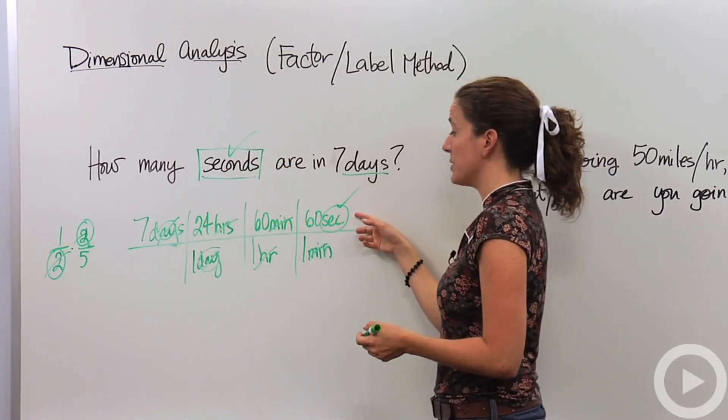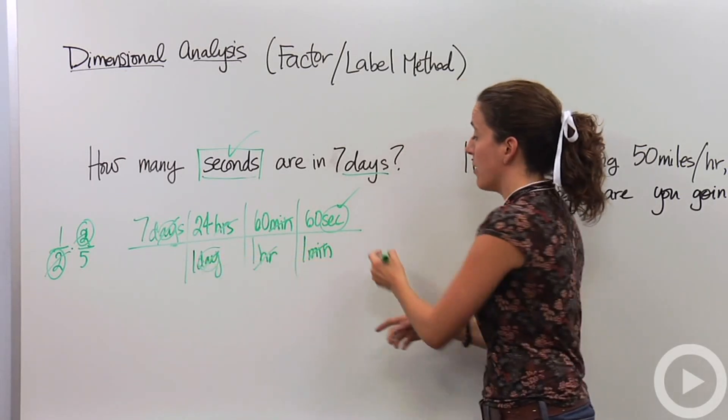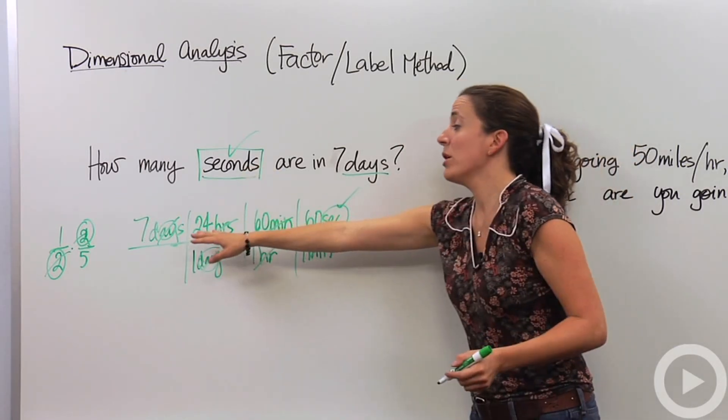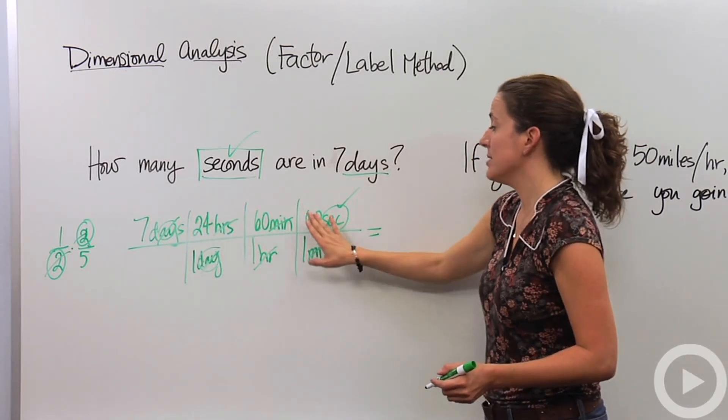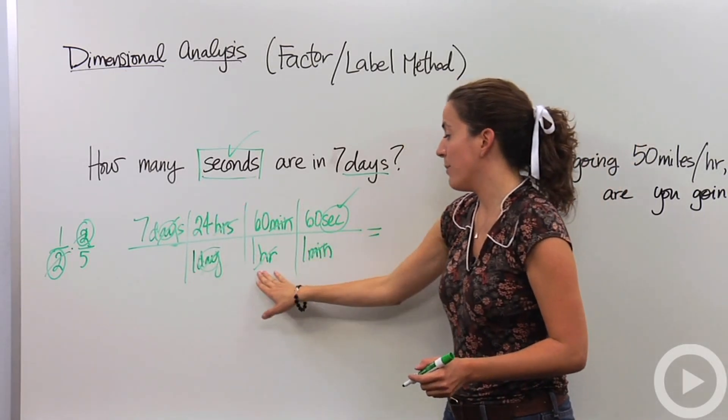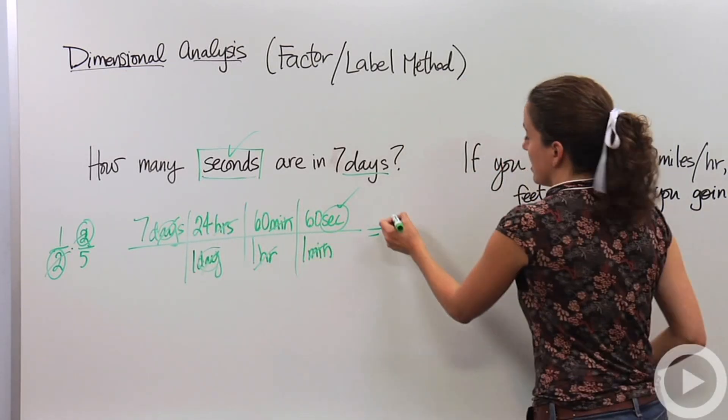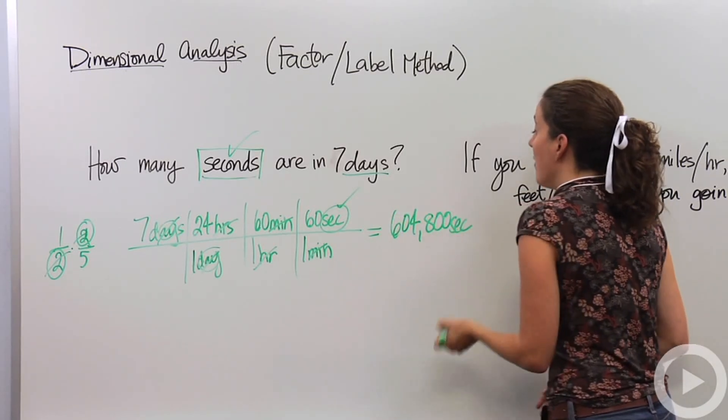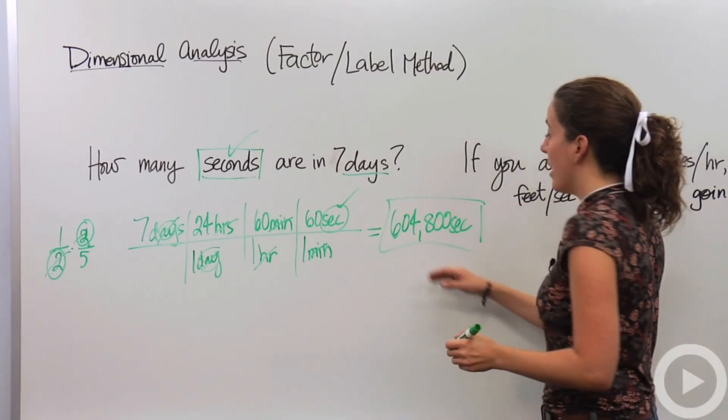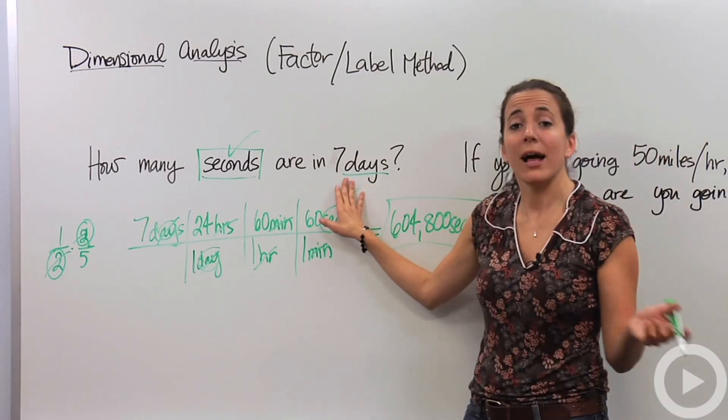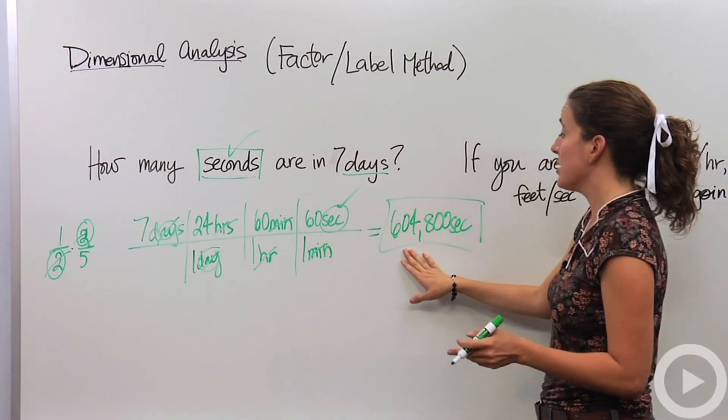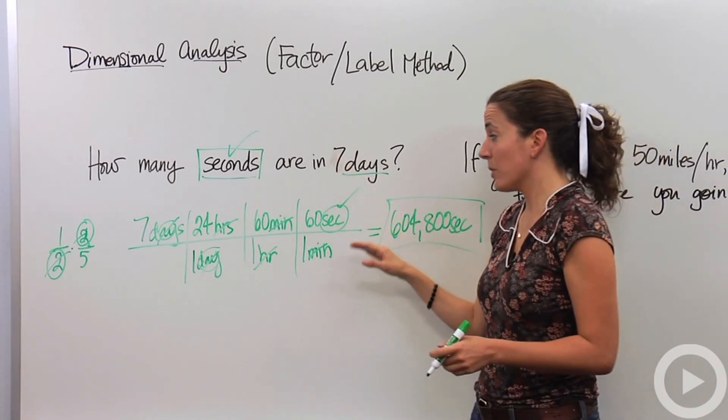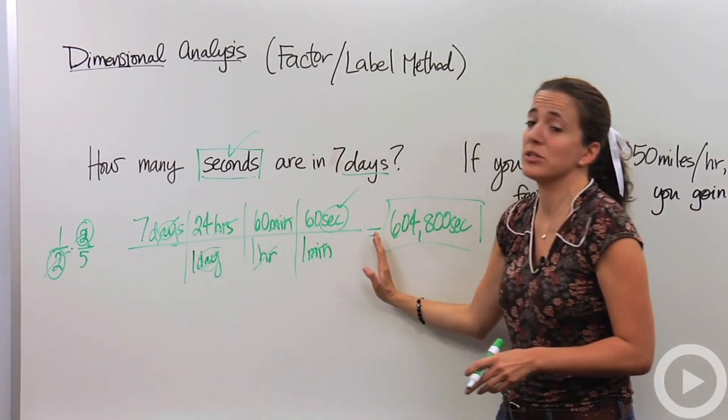So now I can actually multiply all the numerators together and divide by all the denominators. And my answer should be in seconds, should be the correct answer. So if I multiply 7 times 24 times 60 times 60, divided by 1, divided by 1, divided by 1, I get 604,800 seconds. And this makes sense because in seven days, there are lots of seconds as we can imagine. And 604,000 is a lot of seconds. So this actually would make a lot of sense. So this is a method. This is dimensional analysis in a nutshell.